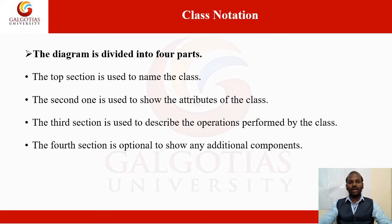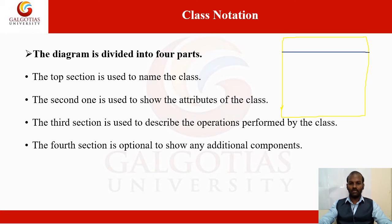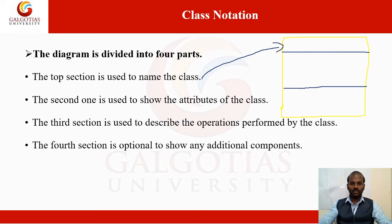Now, how are class notations used in UML? A class is always represented as a rectangular box divided into three different portions: the first is the class name, the second is the attribute, and the third is the operation.